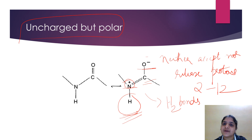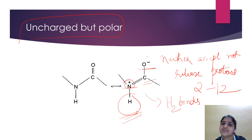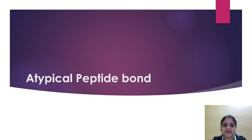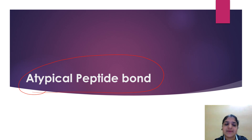To summarize, the four main characteristics of a peptide bond are: partial double bond character; rigid and planar; uncharged but polar; and the C-N bond is trans in nature. Now we will see the characteristics of the atypical peptide bond.